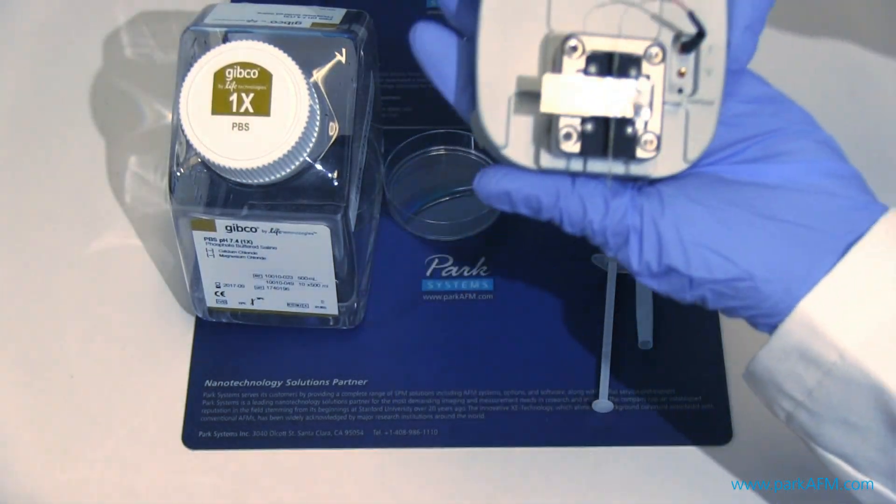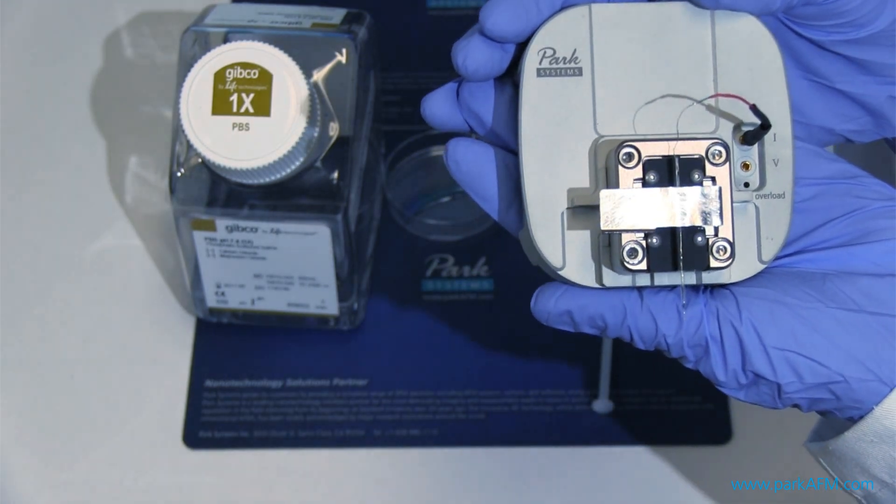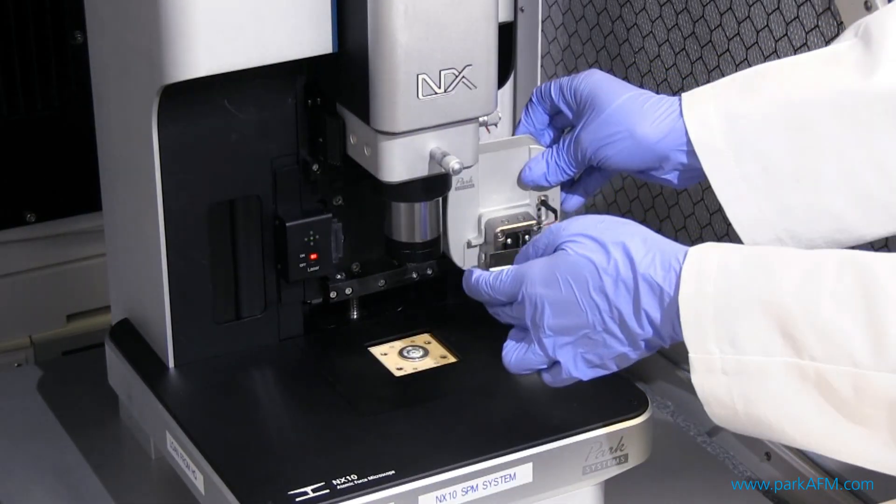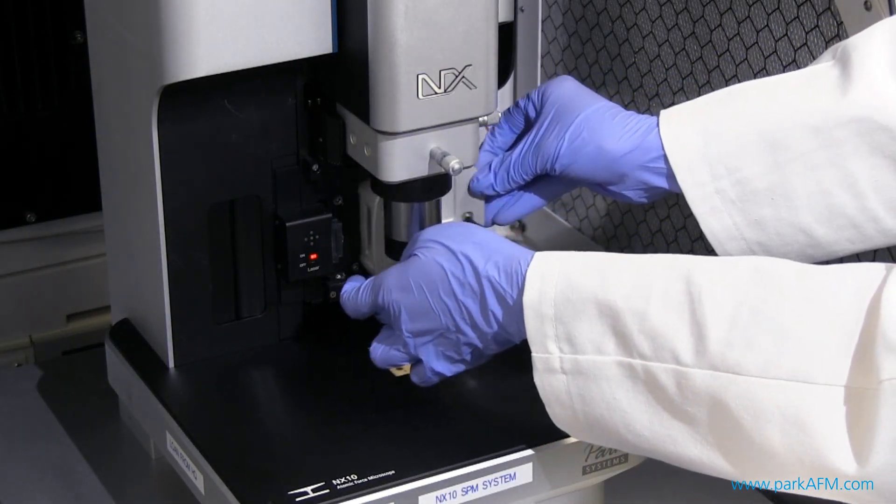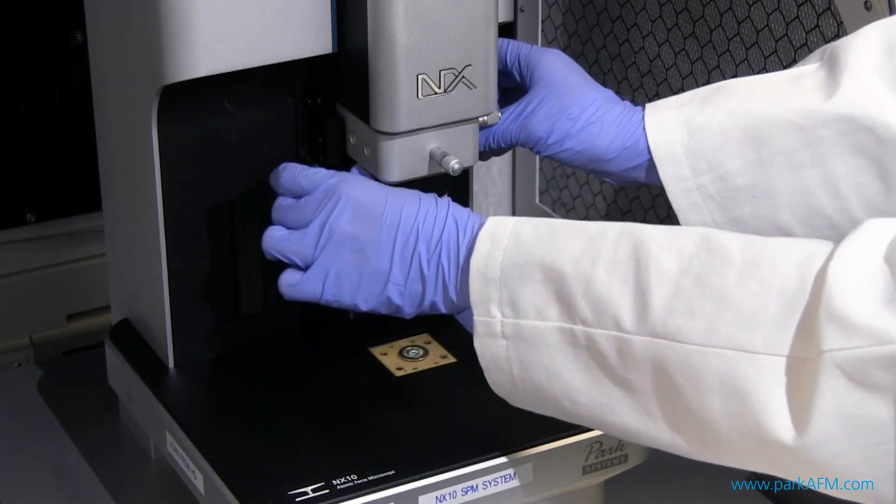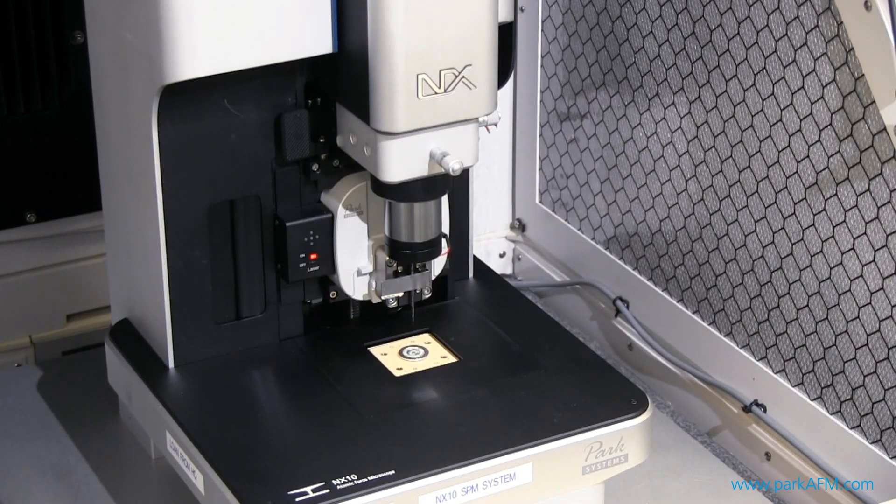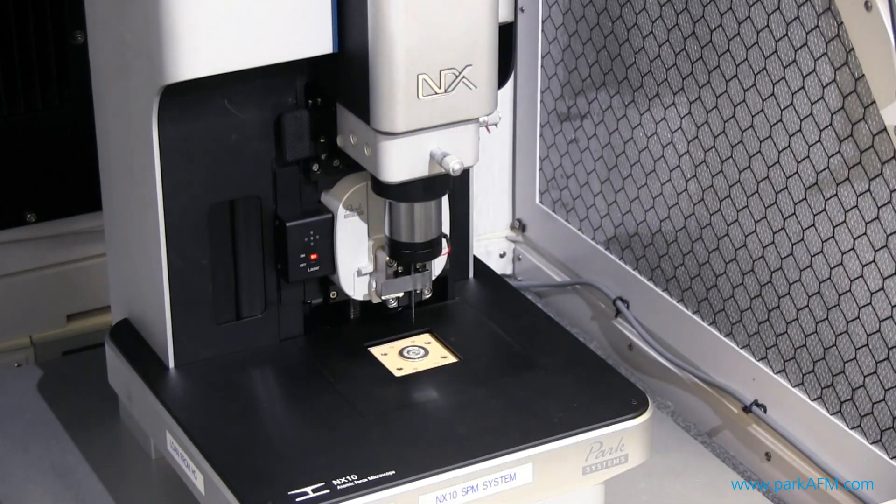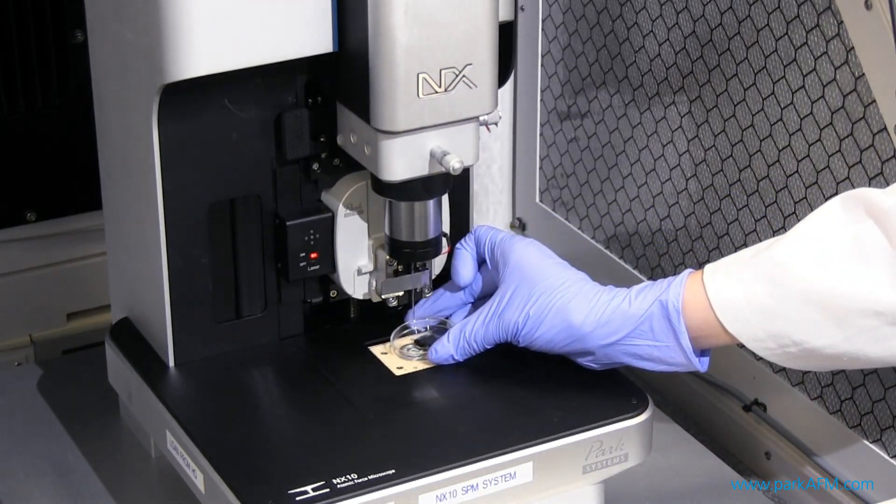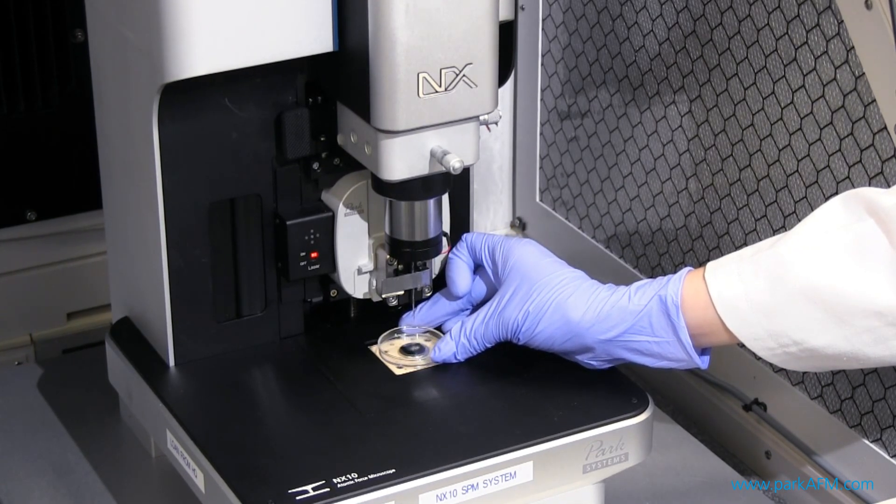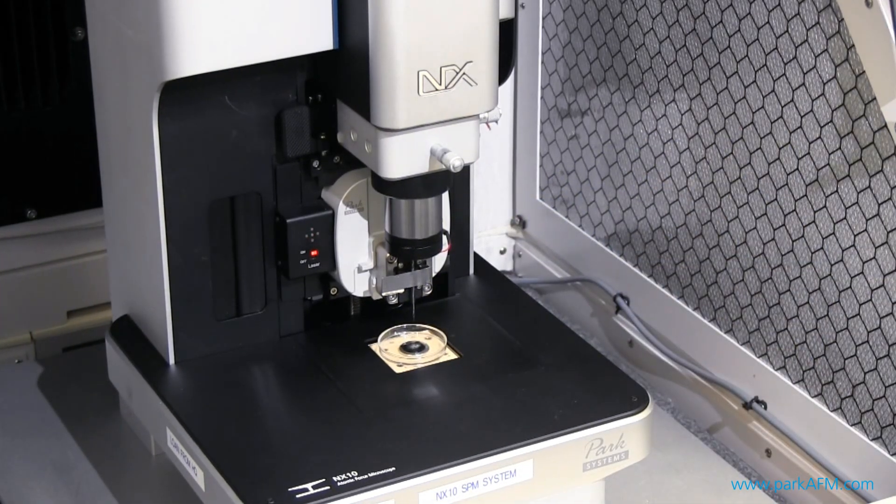When the pipette is ready, put the head back on NX10 by sliding it onto the dovetail rail and then lock it into place. Make sure there's enough space between the end of the pipette and the sample surface. Now place our collagen sample with buffer in a petri dish and put it on our sample stage.